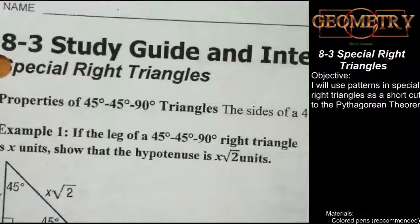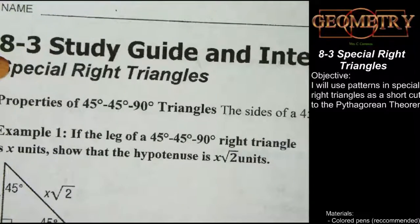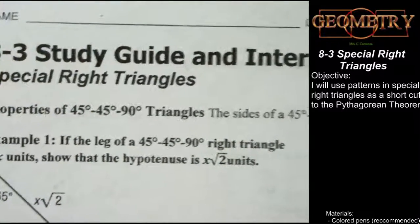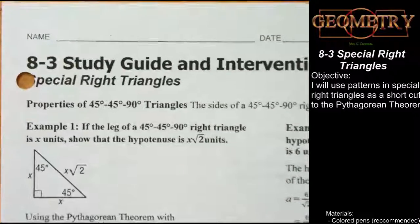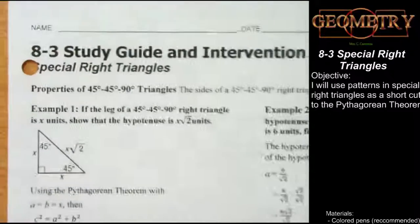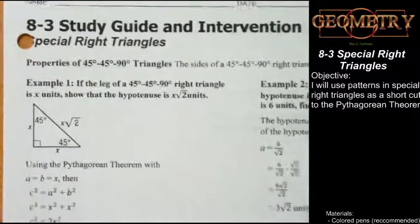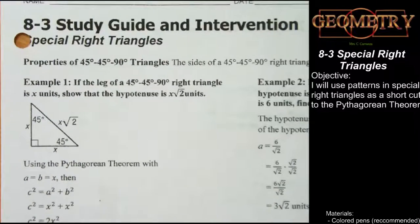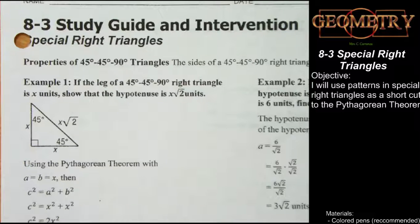Hi, welcome back. In the last episode we were looking at the Pythagorean Theorem, right triangles, and it was a lot of work to calculate one of the missing side lengths. A lot of you were probably thinking, please let there be a shortcut. Well, there is, and this is the episode for it.